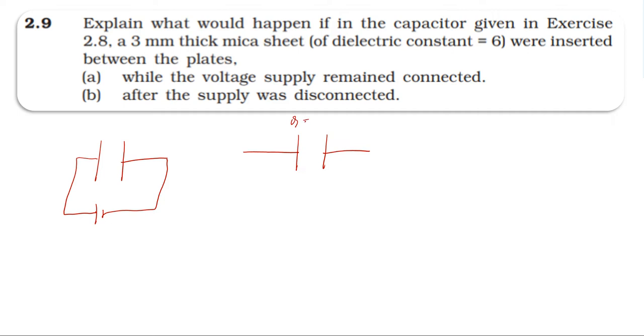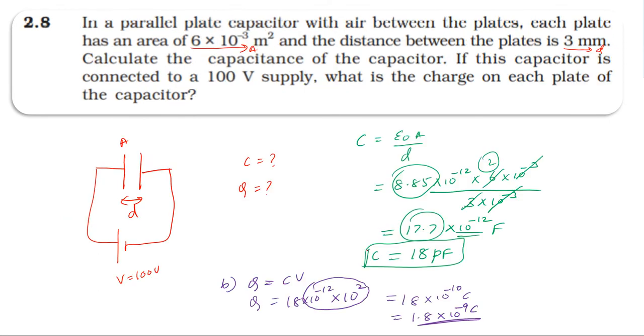After disconnecting, Q is 1.8×10^-9 coulomb. This is the charge. Capacitance is 18 picofarad. Potential difference 100 V. Charge Q = C×V = 1.8×10^-9 coulomb.